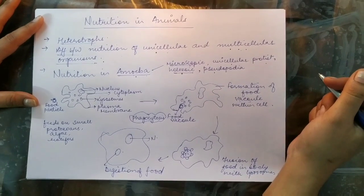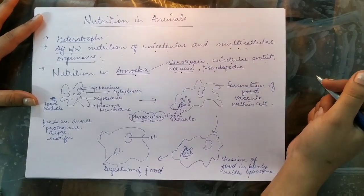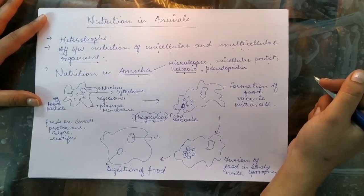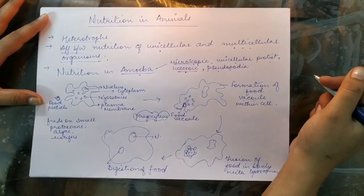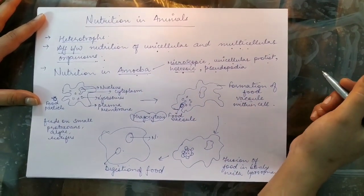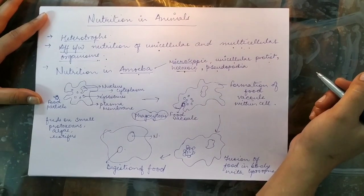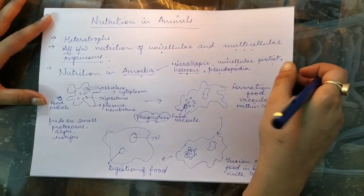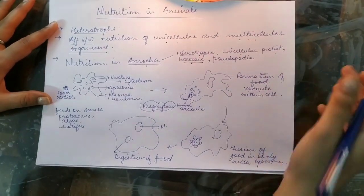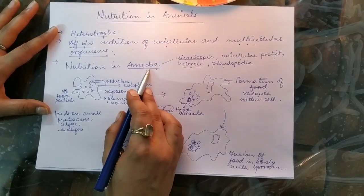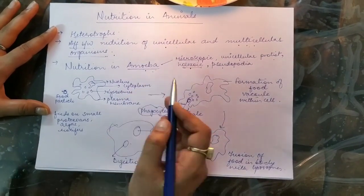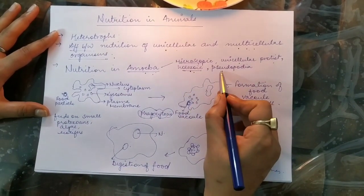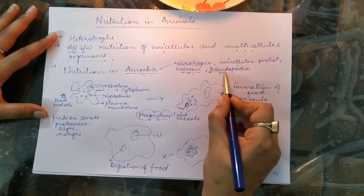Let's continue with the next part of the chapter Life Processes. We are going to start with nutrition in animals. Nutrition in animals is heterotrophic, meaning they are dependent on others for food. The nutrition of unicellular and multicellular organisms is different based on the number of cells they have. In amoeba, which is a microscopic unicellular protist, the nutrition is holozoic and is carried out by false feet-like structures called pseudopodia.